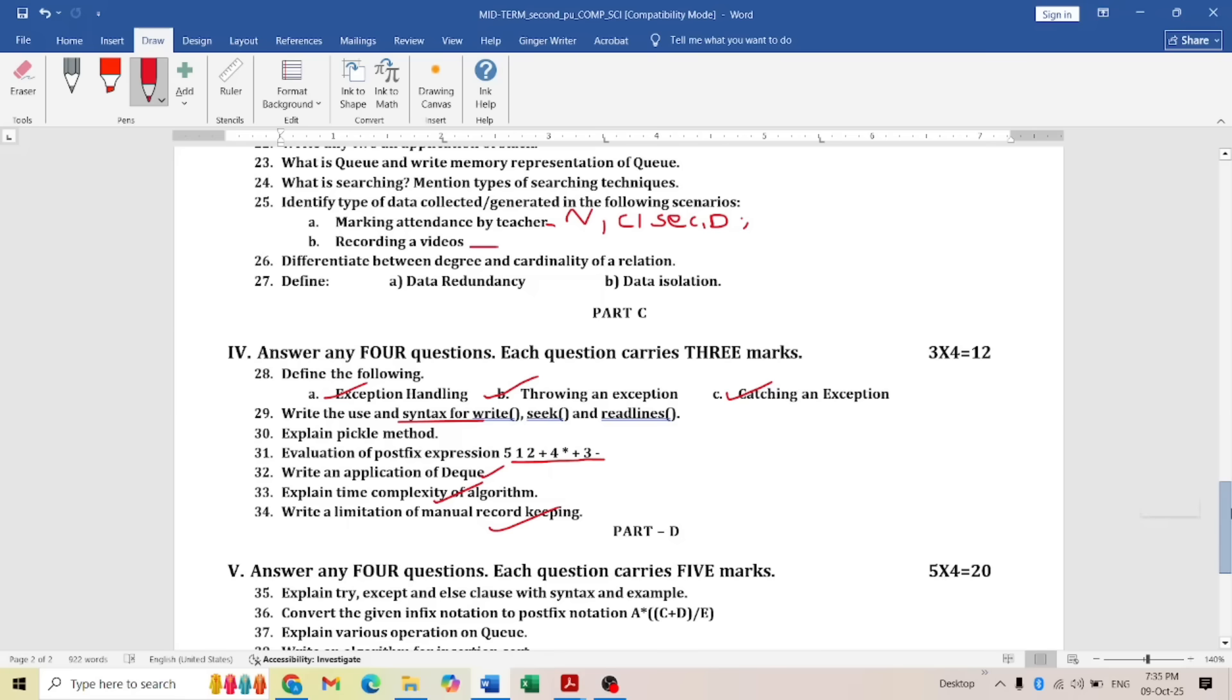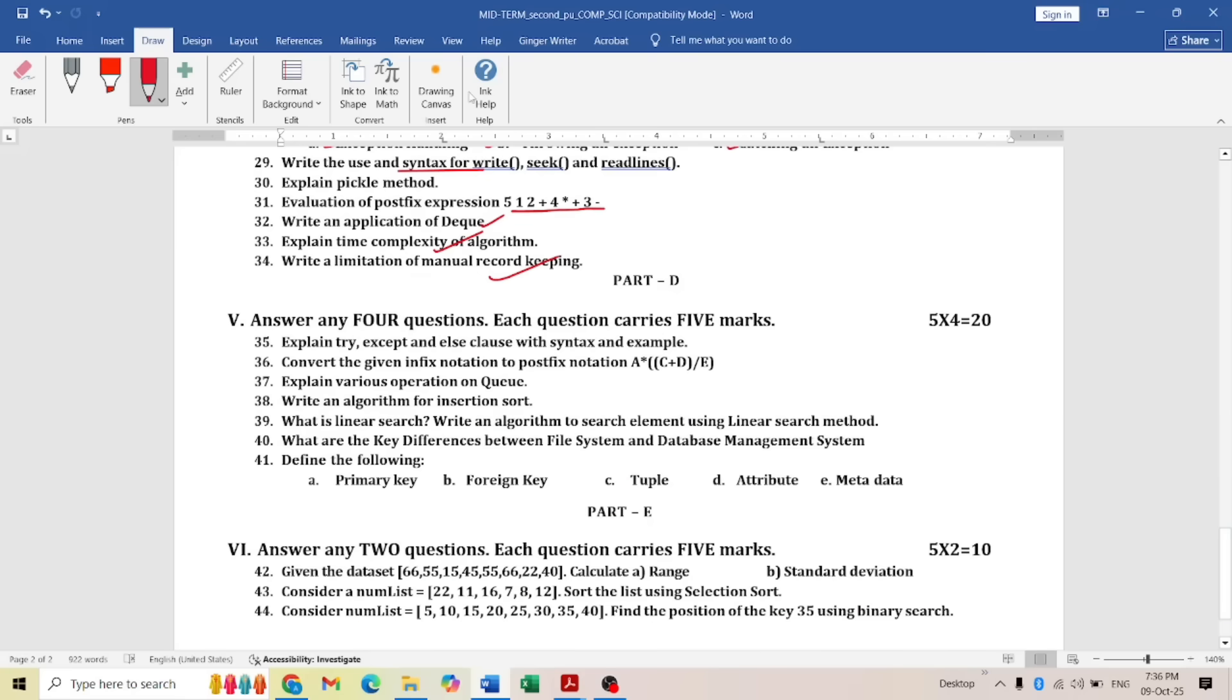Next is the five-marker. The five-marker: explain try-except-else clause with syntax and example. First, you have to explain try-except-else clause. Syntax also you have to mention, example also. Syntax and example—two marks they will be giving.